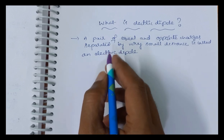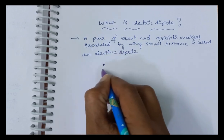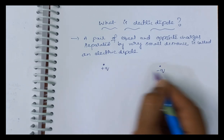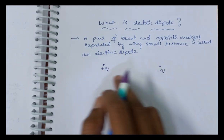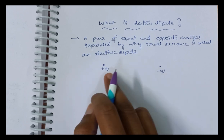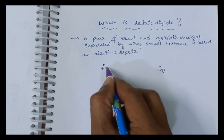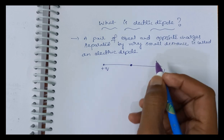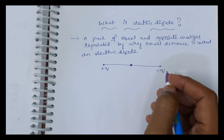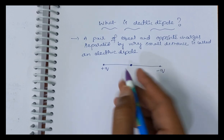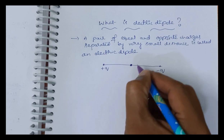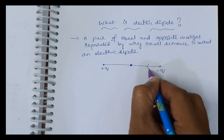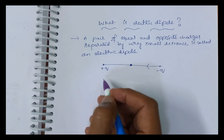Now for the diagrammatic representation of an electric dipole: we have plus q and minus q — a pair of equal charges that are equal in magnitude but opposite in sign, one is positive and the other is negative. The direction of the electric dipole is always from negative to positive, that is from minus q to plus q.